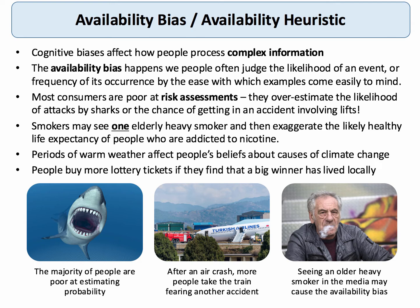It's when we tend to overestimate the likelihood of something happening because either a similar event has happened very recently, or because we feel very emotional about a previous similar event. The result is that people tend to misjudge the likelihood of something happening or the frequency of its occurrence simply because certain examples come easily to their mind.